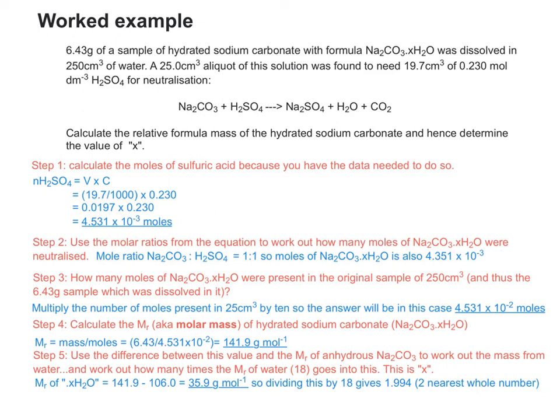So finally, by taking the value of the MR of anhydrous sodium carbonate away from 141.9, so 106 subtracted from 141.9, that gives us 35.9 grams per mole, which is the MR of our fictitious dot XH2O. So to work out what X would be, because the MR of water is 18, you divide that by 18, and that gives us 2 to the nearest whole number. So the value of X would be 2 in our formula.